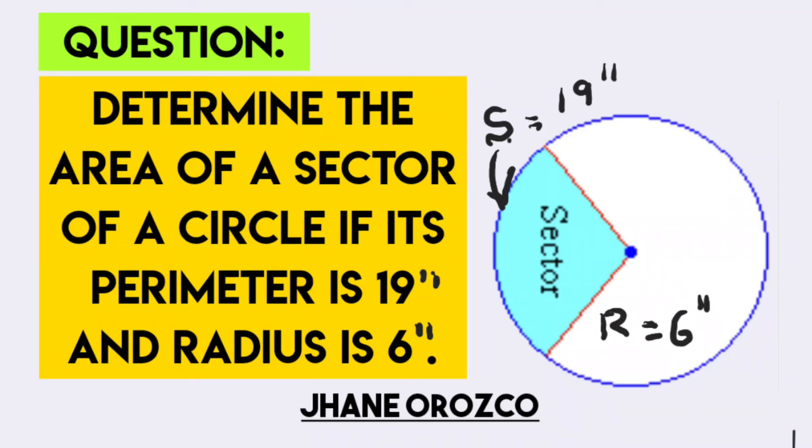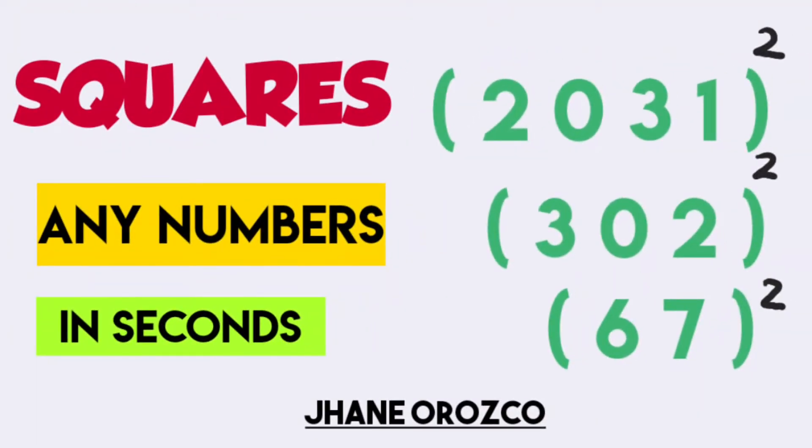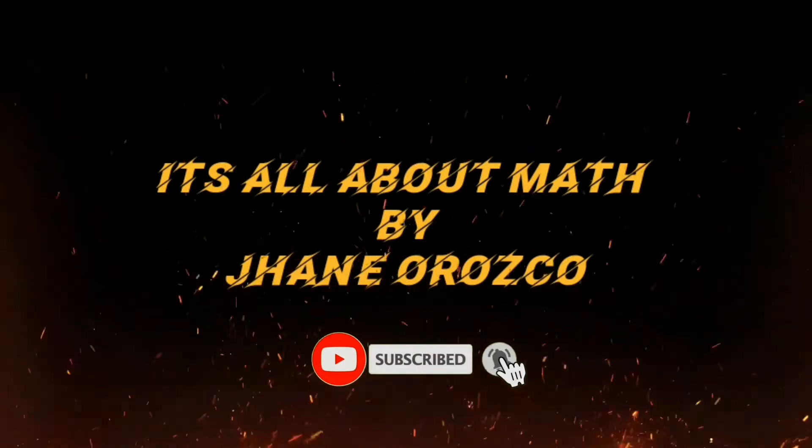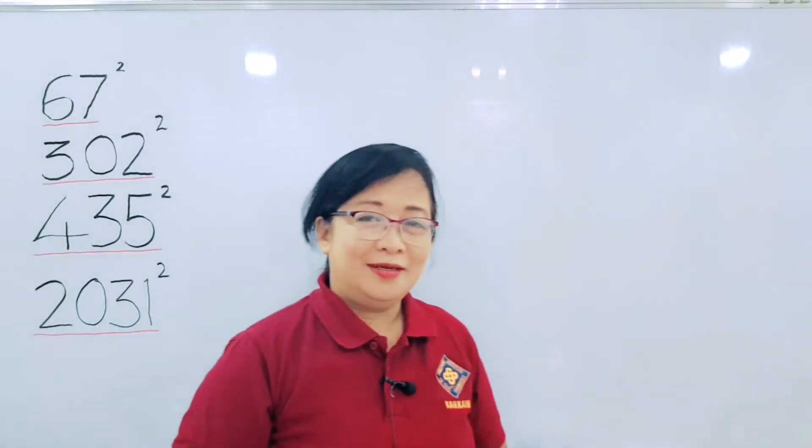Determine the area of a sector of a circle if the perimeter is 19 inches and radius is 6 inches. This is the question to be answered here on premiere. Good luck! Hello Genius!